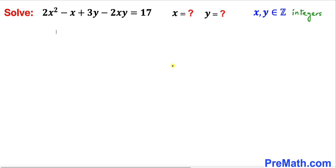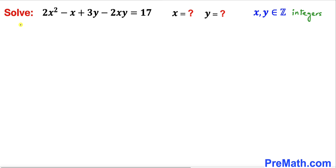Let's get started with the solution. We are going to isolate y first, so I am going to move 3y and negative 2xy to the right hand side and at the same time move 17 to the other side. So this equation becomes 2x squared minus x minus 17 equals 2xy minus 3y.